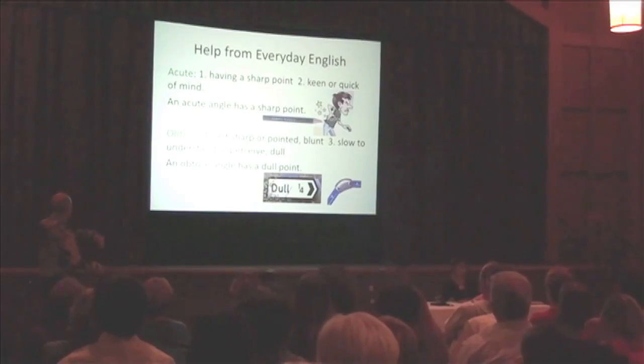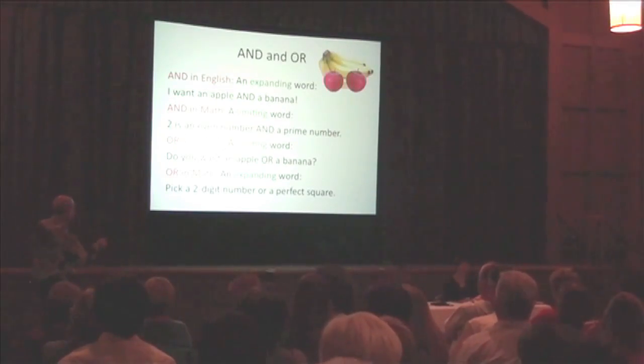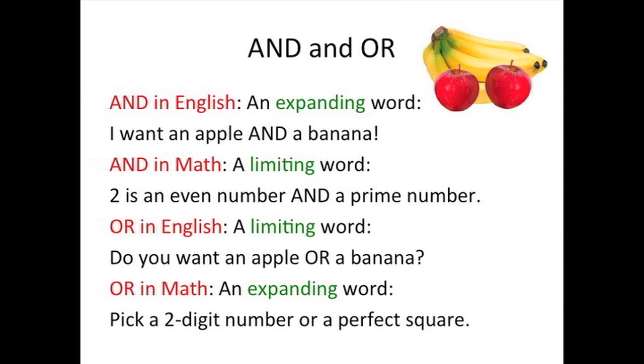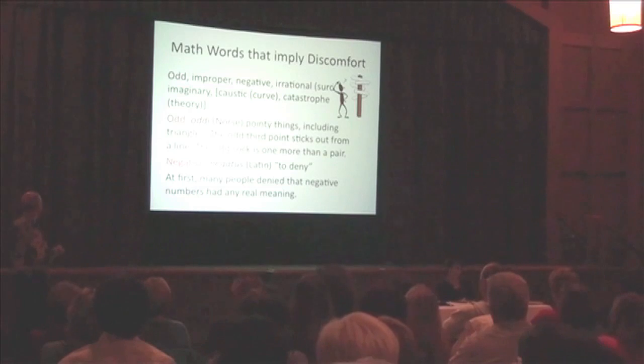Obtuse means dull, and there's actually a city. And 'or' — in English, 'and' is an expanding word: I want an apple and a banana. But in math it's a limiting word: two is an even number and a prime. 'Or' in English is a limiting word — you want an apple or a banana, we don't mean both. In math, we could.